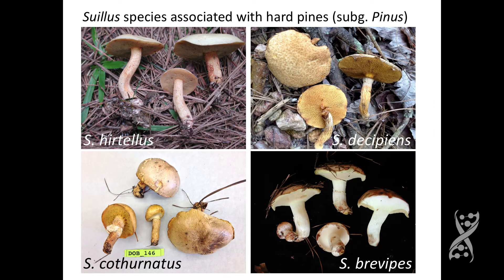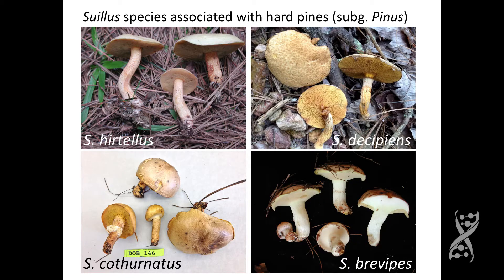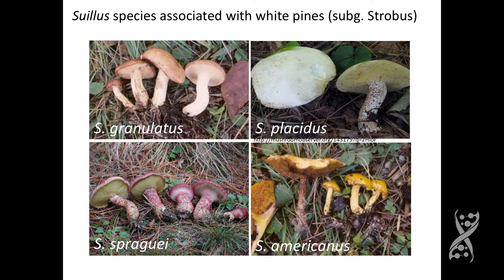We use Suillus as our model system to study this because among the pine-associated EMF, Suillus shows the strongest host specificity. For example, some Suillus species like S. hirtellus, S. decipiens, S. cotinatus, and S. brevipes are only found under hard pines, while other species like S. spraguei, S. granulatus, S. placidus, or S. americanus are only found under white pines. This indicates that besides geographic factors, host specificity is also a key driver contributing to the co-distribution of Suillus with their pine hosts.